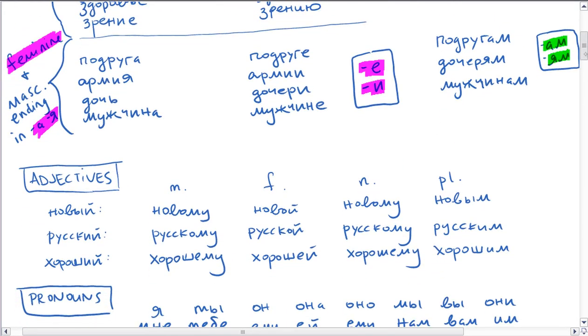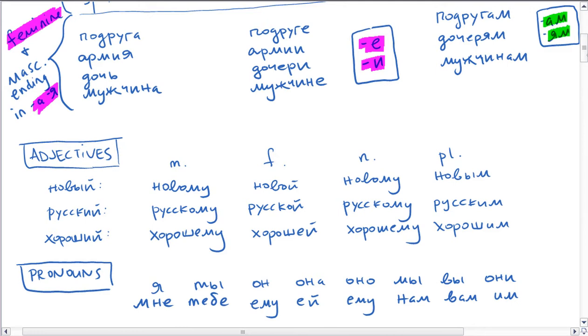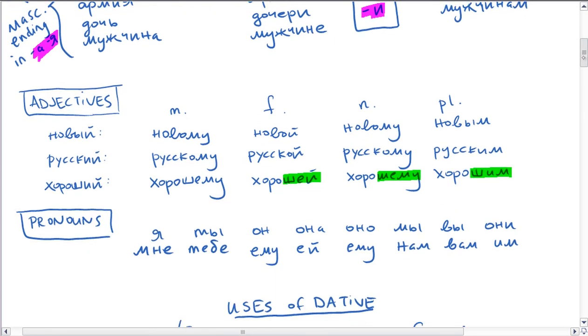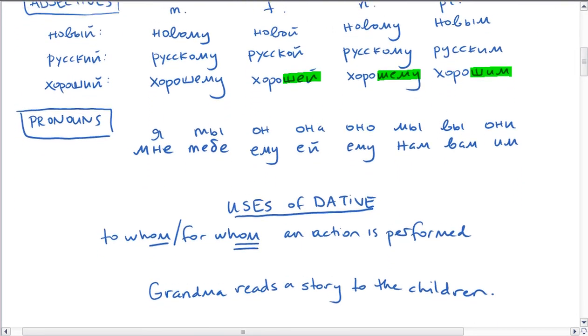So pretty straightforward. Similarly with the adjectives and the pronouns. And again, just pay attention to your spelling rules. Use soft letters after soft consonants. So when do we use the dative case? There are quite a few different times. In general, whenever you would say to whom or for whom in English, you're going to use the dative case.